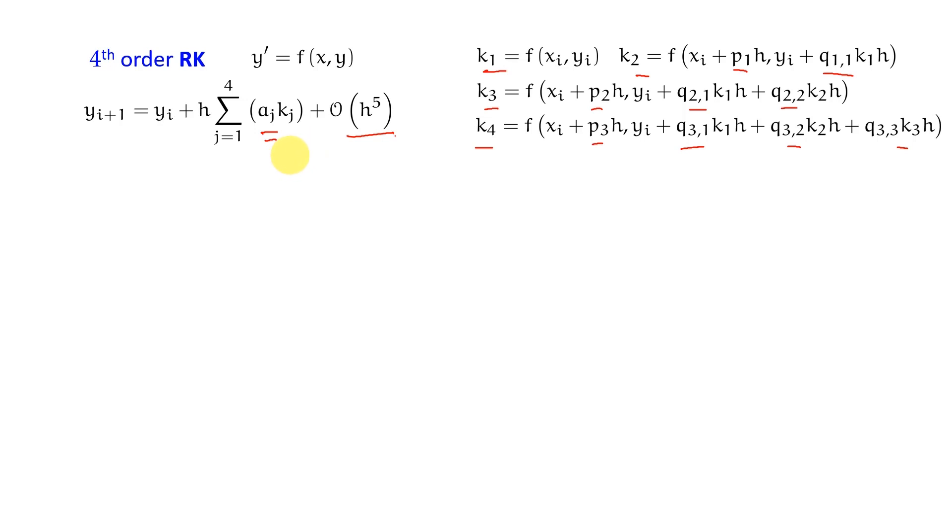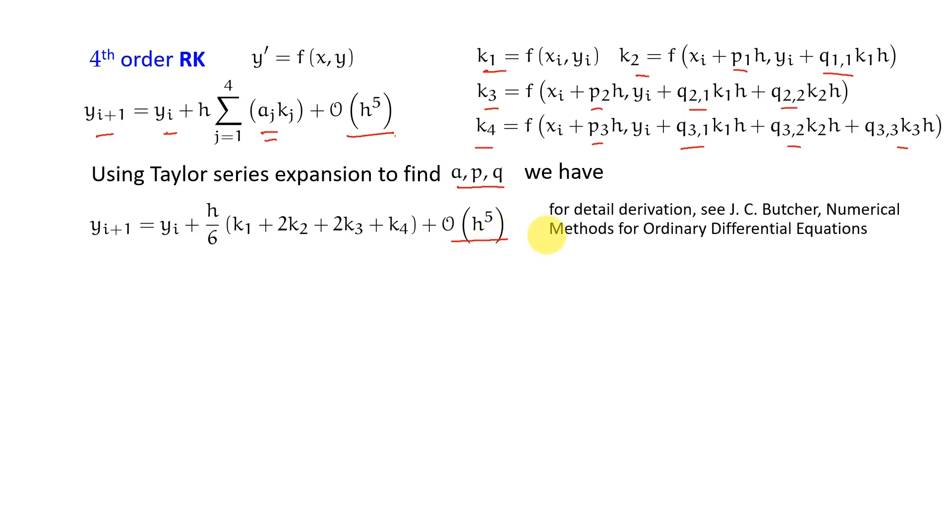The way to get these unknowns is complicated and we will not discuss it in detail, but essentially what we have to do is use Taylor series expansion to find this coefficient a, p, and q. So each of k2, k3, k4 we have to break in Taylor series, and also yi+1 = yi + something, this is also we have to break in Taylor series. We have to match the coefficients and that will give us some equations, and then the remaining equations we have to make a choice which will give us the best order of accuracy.